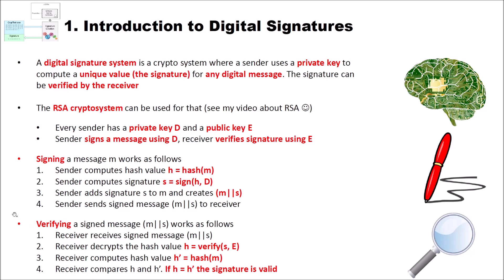On the receiver side, the receiver can verify the signed message MS as follows. First, the receiver receives the signed message. Then the receiver decrypts the hash value to verify the signature — he computes H which is equal to the verify function, and in case of RSA this is just decryption — decrypting the received S using the public key of the sender E. Then the receiver computes a hash value H dash which is the hash of the received message. The receiver then compares the received H and the computed H dash, and if H and H dash are equal, the signature is valid.